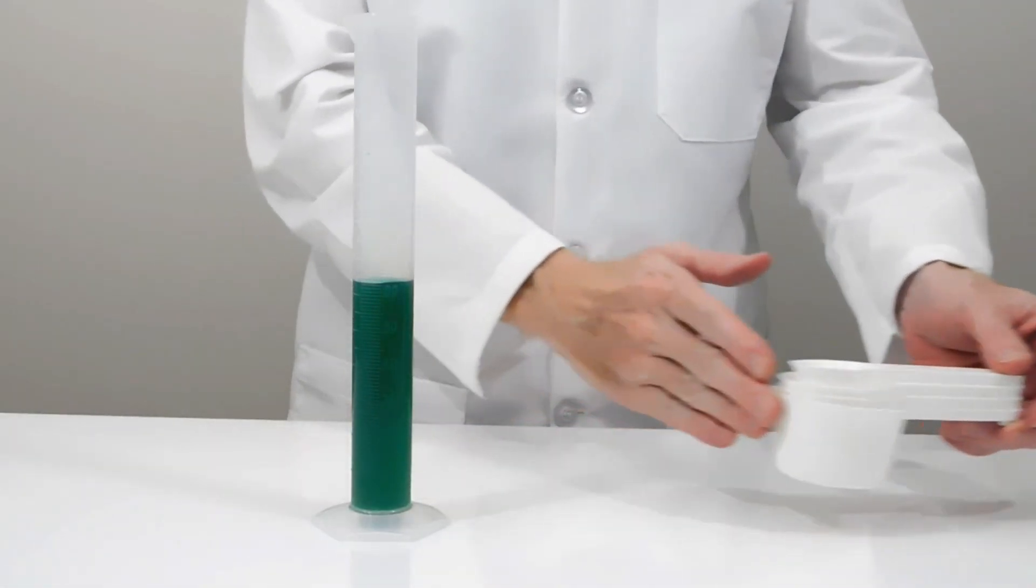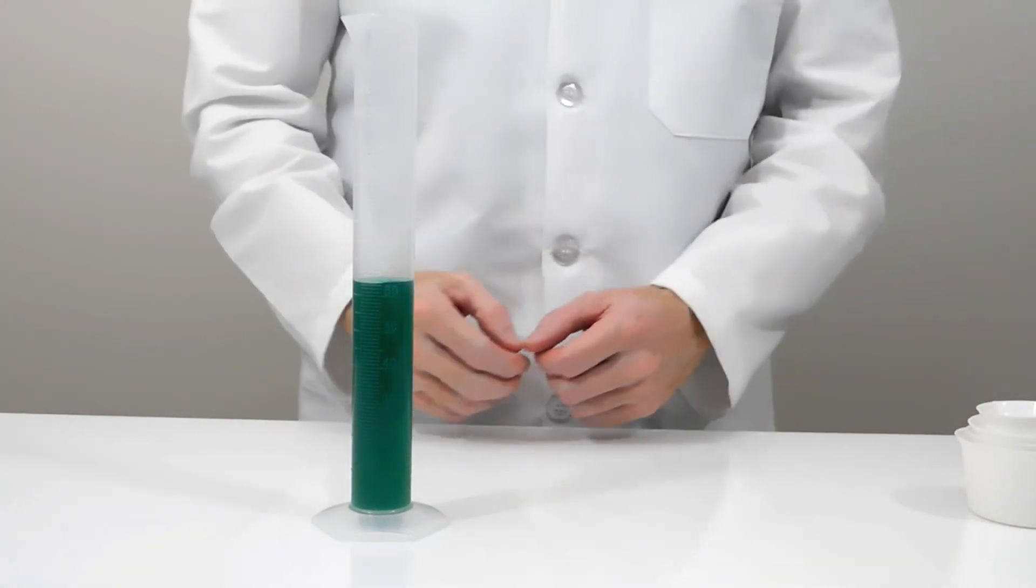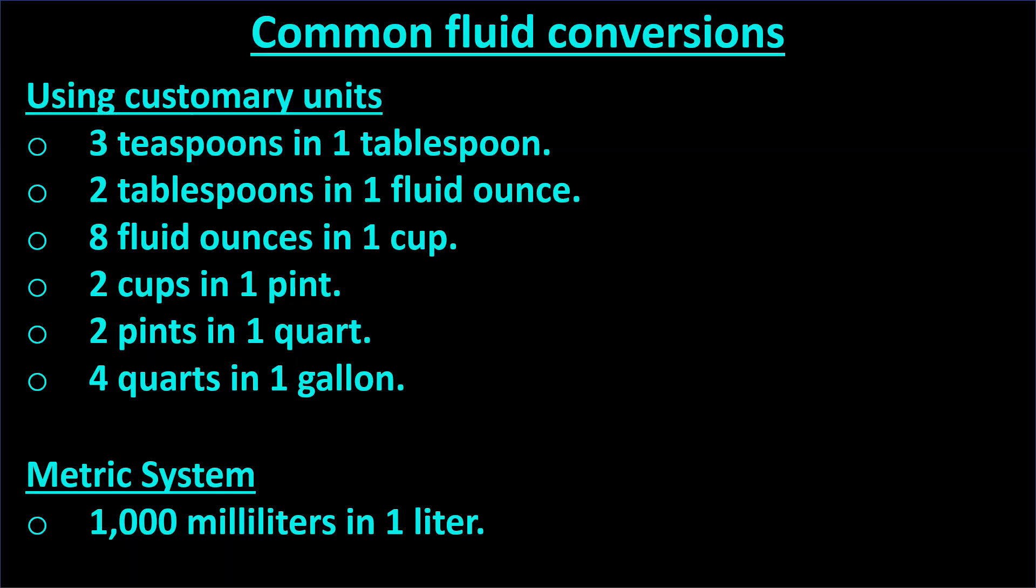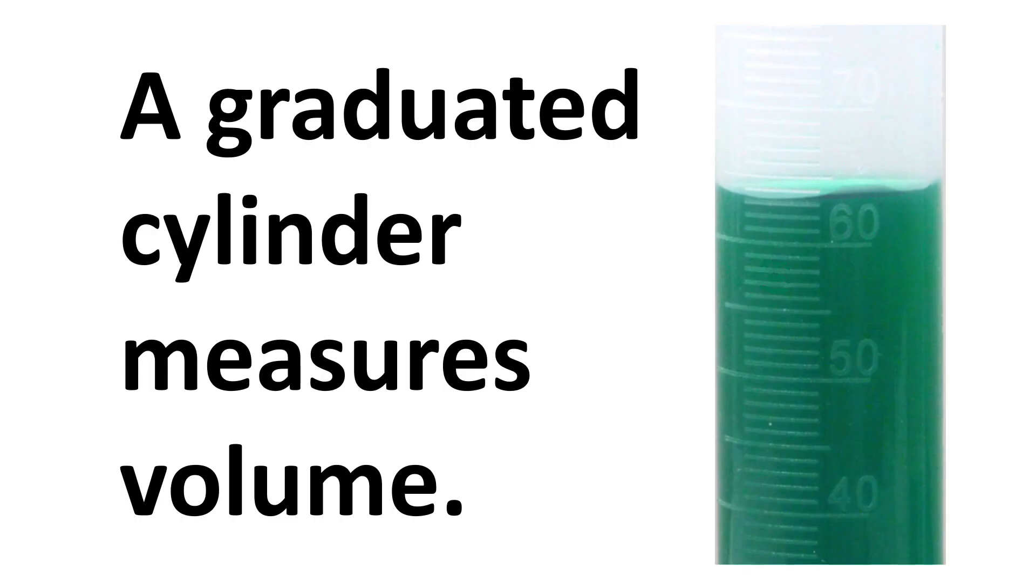Since it's easier to do math with decimals than fractions, the metric system uses decimals. Plus, metric conversion tables are simpler than customary ones. To summarize this scientific instrument, a graduated cylinder measures volume.